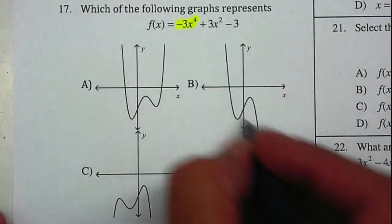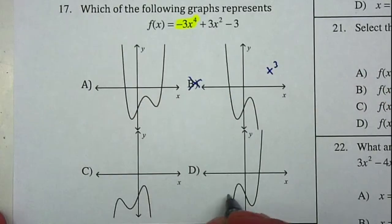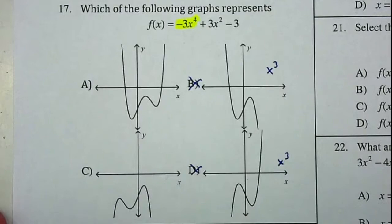1, 2, 3. No, this one will have to be x to the 3rd. 1, 2, 3. This will also have to be x to the 3rd, so it's not B or D.